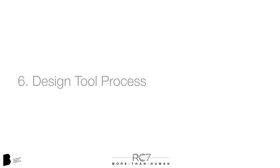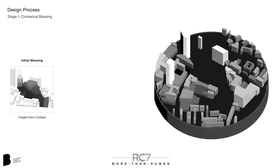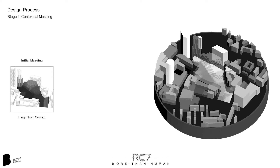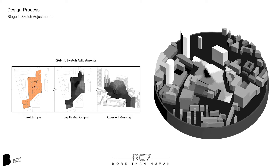Based on our procedural datasets and GAN experiments, we have developed a two-stage design process which balances human input, contextual data, and environmental analysis. The first stage involves the generation of the massing model. The initial mass is generated from the heights of the surrounding buildings using GIS data translated into grayscale colors. Our previous massing GAN is then used to allow sketch adjustments to be made to the massing model.